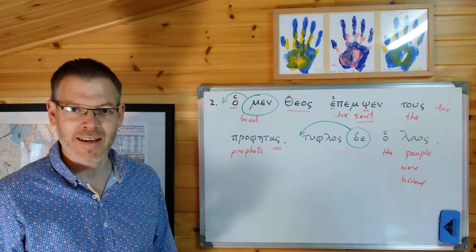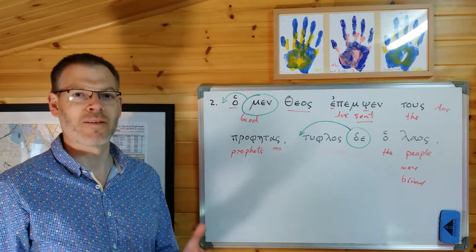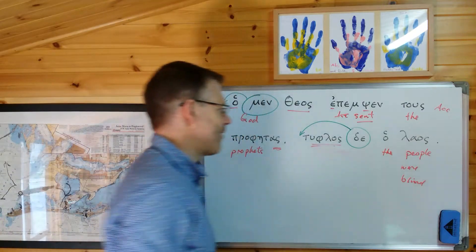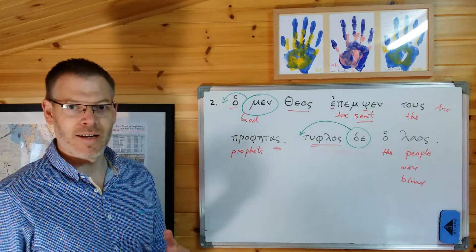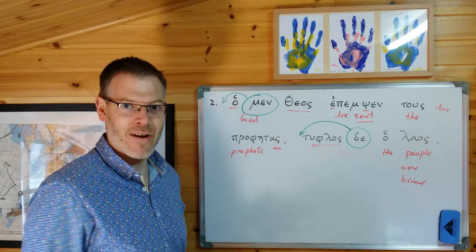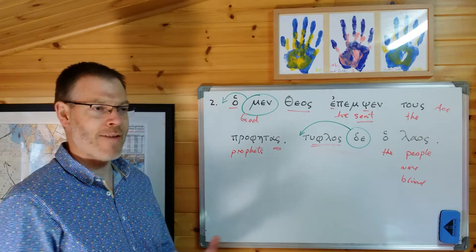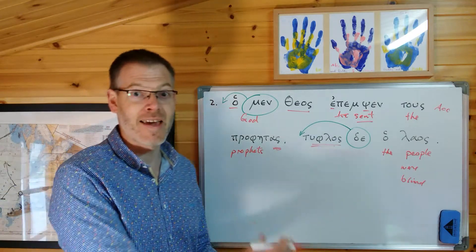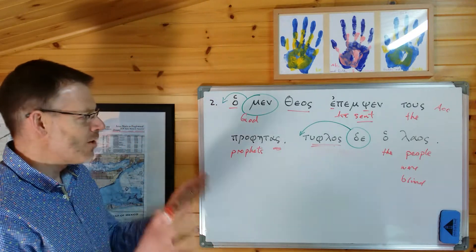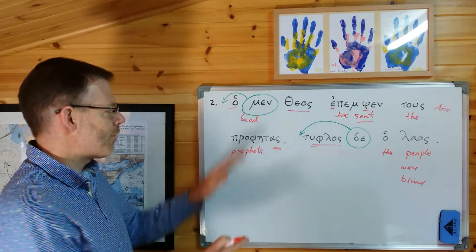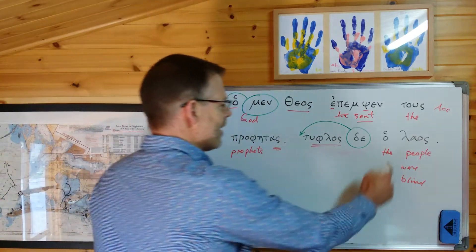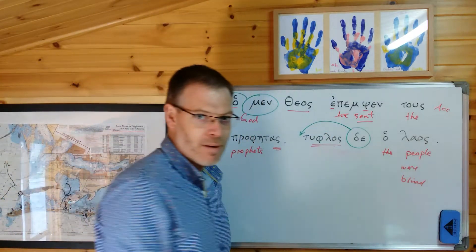You can imagine saying 'blind were the people' - in Greek you've got that for perhaps a note of emphasis, putting the adjective up front in the clause to emphasise it. But we'd probably say 'the people were blind.' So without men and de: 'God sent the prophets, the people were blind.'